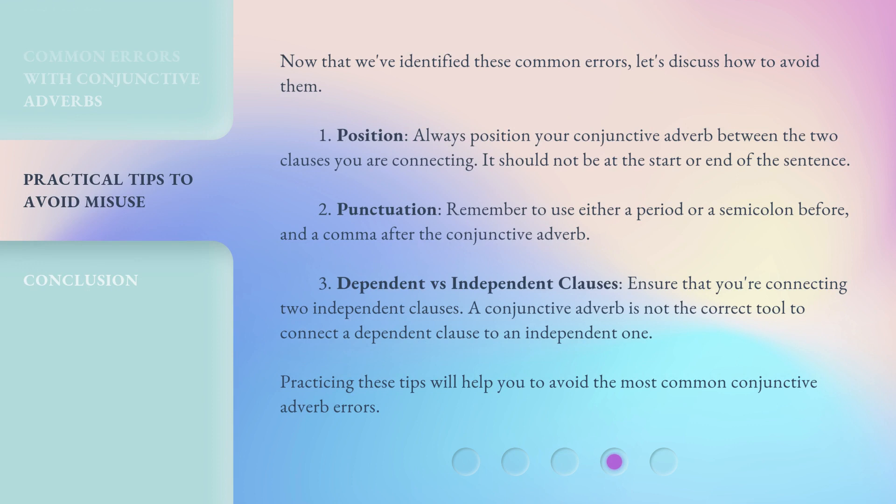Now that we've identified these common errors, let's discuss how to avoid them. First, Position: always position your conjunctive adverb between the two clauses you are connecting — it should not be at the start or end of the sentence. Second, Punctuation: remember to use either a period or a semicolon before, and a comma after the conjunctive adverb. Third, Dependent vs. Independent Clauses: ensure that you're connecting two independent clauses. A conjunctive adverb is not the correct tool to connect a dependent clause to an independent one.